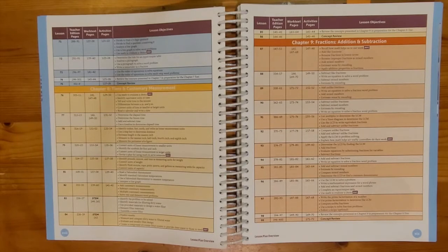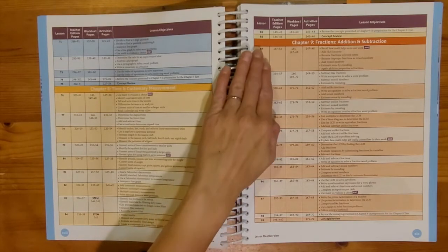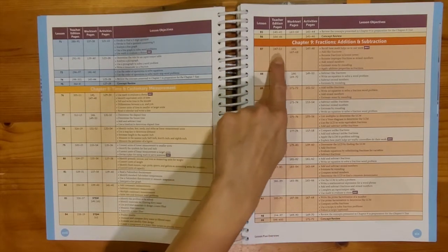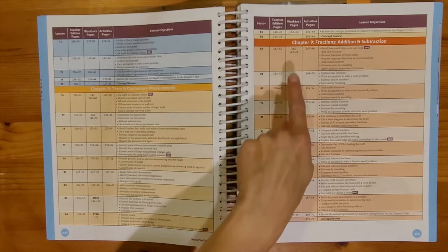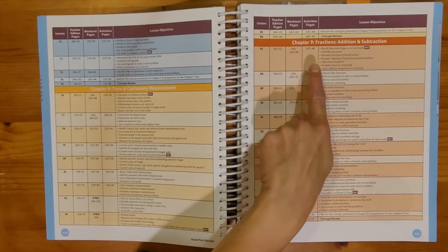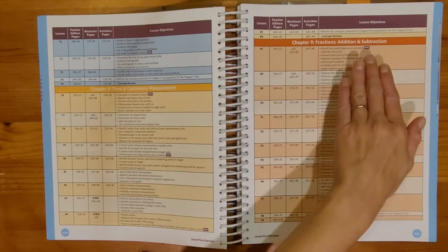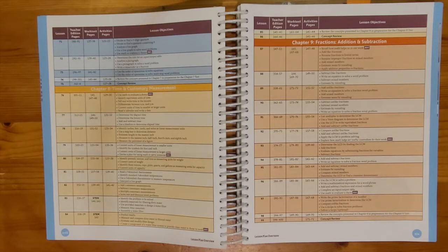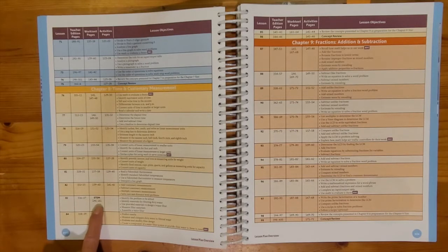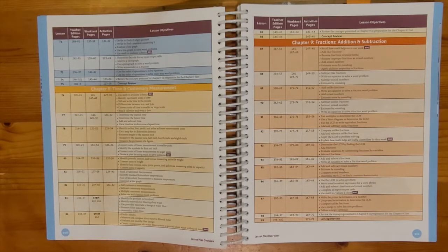I like to use these pages to help me plan because it tells me my lesson number, which pages I'm looking at in the teacher edition book, and then which pages I'm assigning in both the worktext and the activity pages for my child. I also have a list of the objectives for each lesson. You might notice that in chapter 8, I have a STEM page to do. So on all of the even chapters in this book, you will have some form of STEM activity, something that will connect what they're studying in their math lessons to a real world experience.